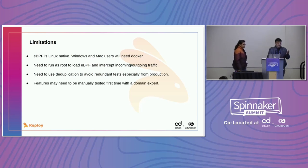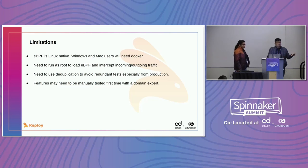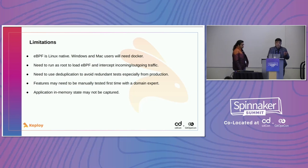Since we are recording test cases, capturing and generating stubs, there has to be a domain expert who verifies the results. Keploy doesn't know what is correct or not — it just asserts against history. If something changes, you will know, but whether it's right or not is up to you. Also, in-memory state cannot be captured because we capture network calls, so applications whose responses depend on internal state are automatically out of scope.